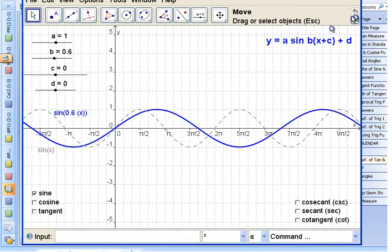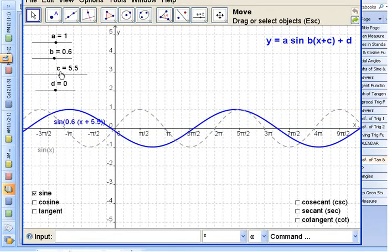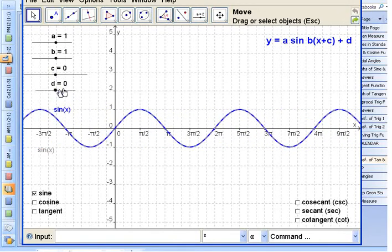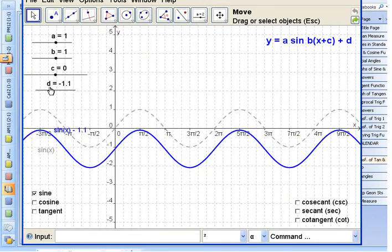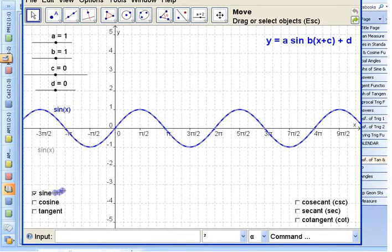You can change the phase shift, move it left to right. And you can change the vertical shift of the thing here. All four of those things affect that graph the same way. It's going to be the same thing with the other graphs here.